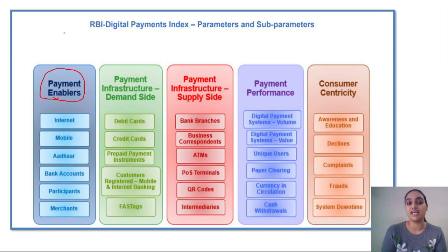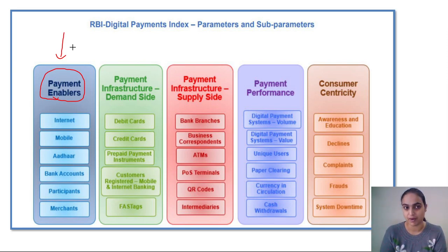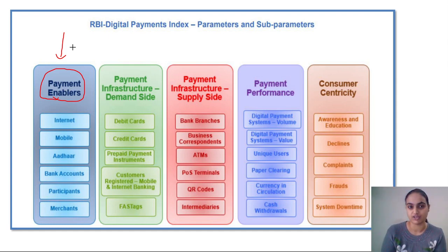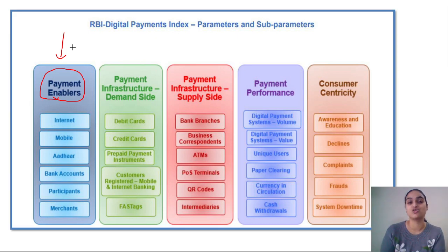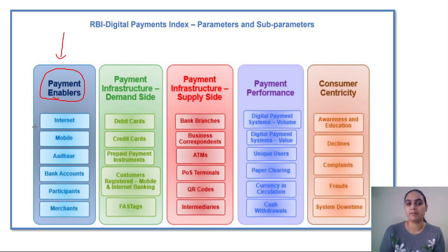Payment Enablers cover the options available that help facilitate making payments. To make an online payment you need a mobile phone and internet connection; to transfer money you need a bank account. Aadhaar-based verification is also a payment enabler for the AePS system. Merchants offering digital payment facilities are also payment enablers — internet, mobile, Aadhaar, bank accounts, and similar things.